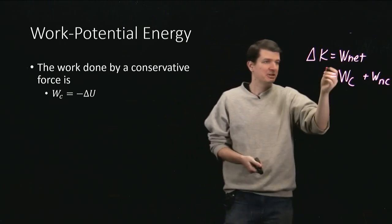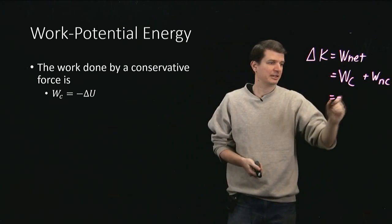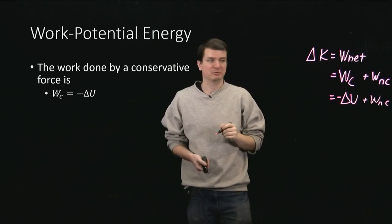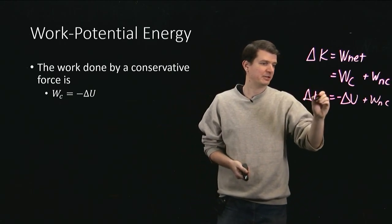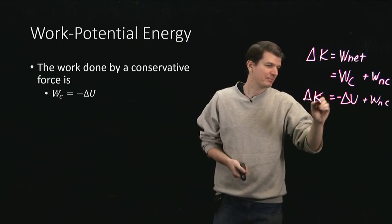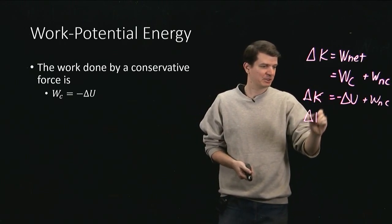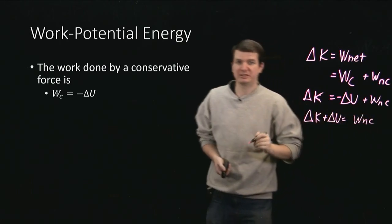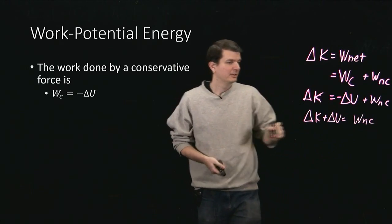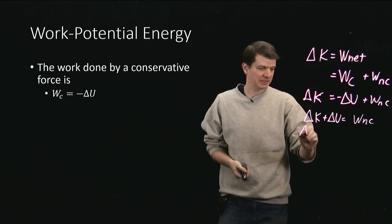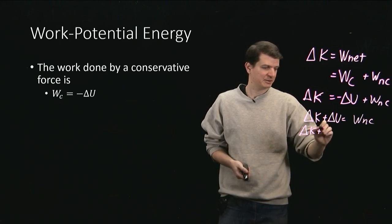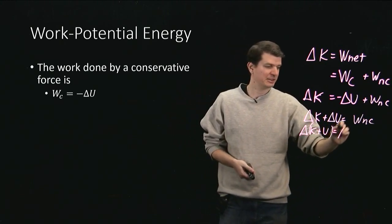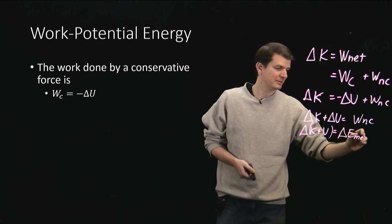So the work done by gravity is the negative of the change in potential energy, because the potential energy is basically the work that I've stored in the system by lifting the marker up. We can go ahead and replace W_c with the negative of the change in potential energy. We still have our non-conservative forces doing some work, and all of that still equals delta K. Rearranging, we get delta K plus delta U as a whole — that's the change in the mechanical energy of the system.